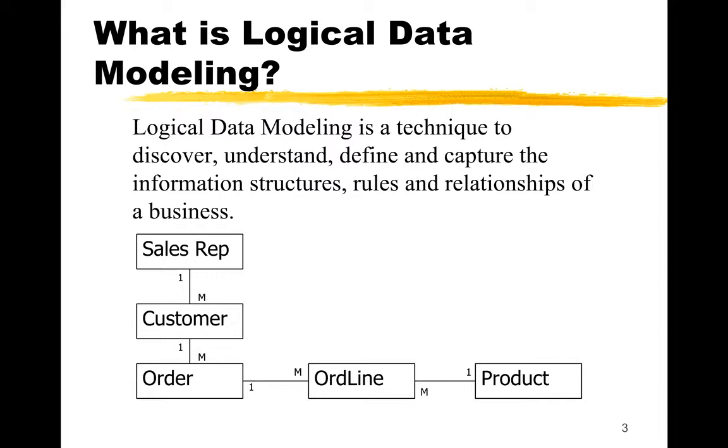For example, this is an example of a data model. There are different types of entities, and if you can see here, it almost looks like it's a data model for ordering something. You would have a sales rep that would talk with a customer, they would have an order, they would have a product that's purchased, and the ORD line is all just the lines on the order itself.